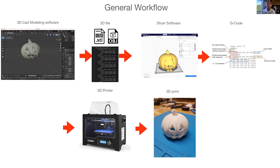A 3D print usually starts as a 3D model, and it'll likely touch some 3D CAD modeling software at some point. In the 3D modeling software, one may create the model — which is a mathematical representation of a physical object — or they may acquire it through other means such as 3D scanning or photogrammetry. It'll go into the 3D CAD modeling software, get prepared, and then be exported to a 3D file.